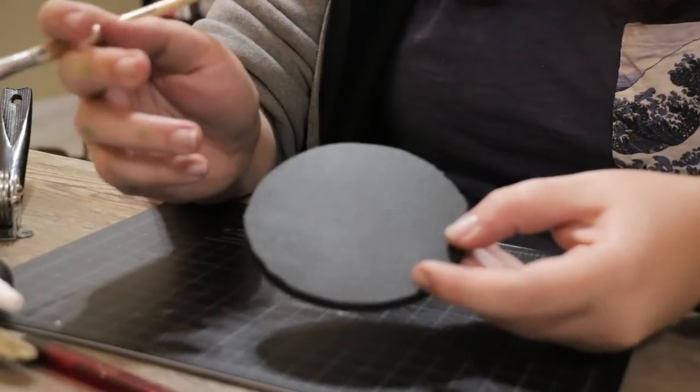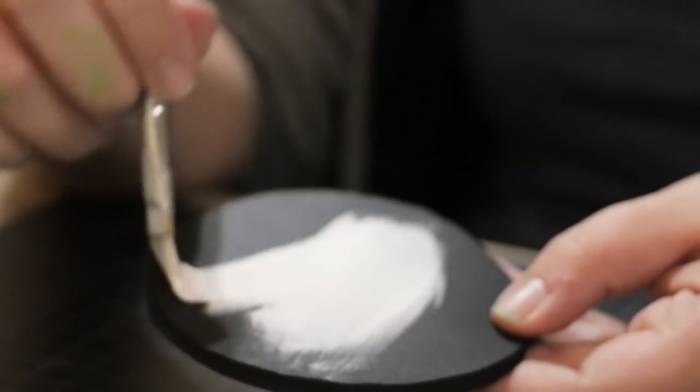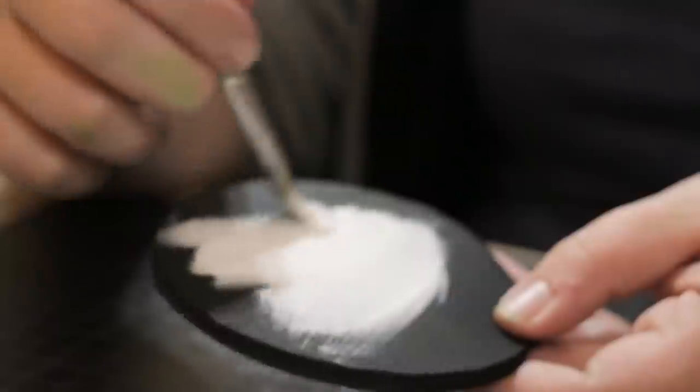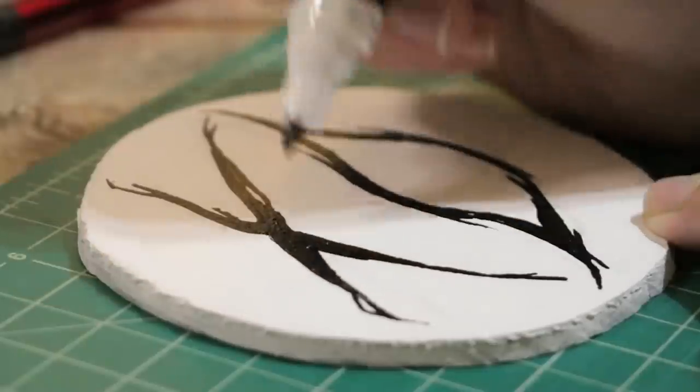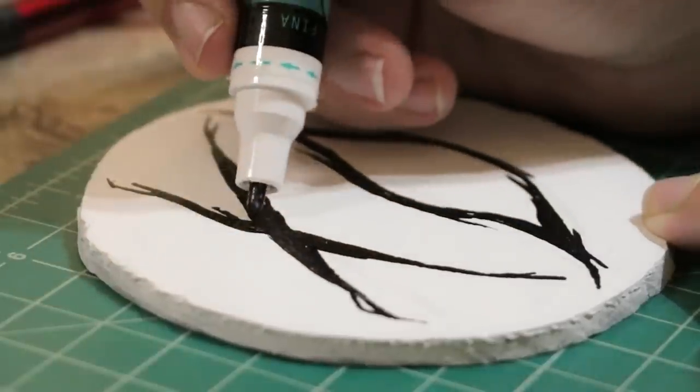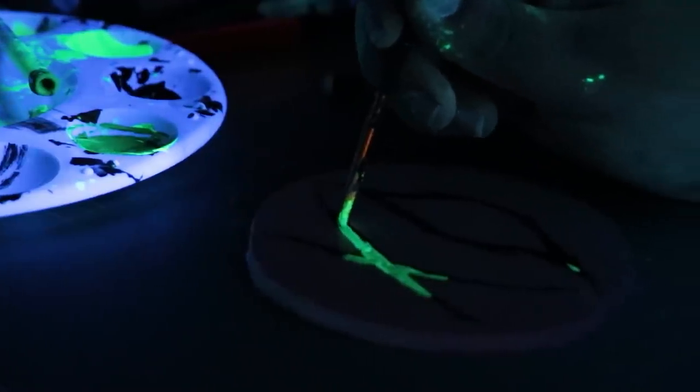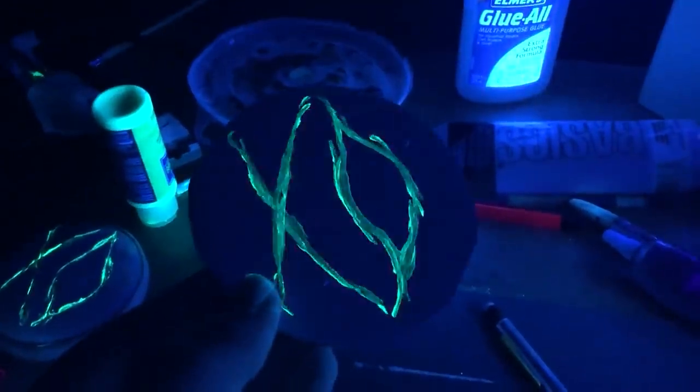So trying again, I just used a flat piece of EVA foam and painted that. Then using a black paint pen, I drew on the letters, then going over that with the green UV light paint. So happy that I started over. It looks way better than before.